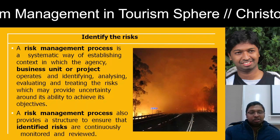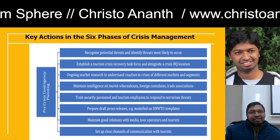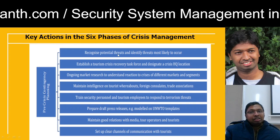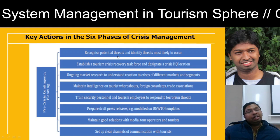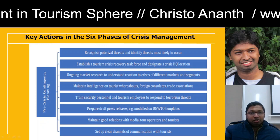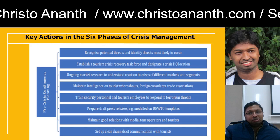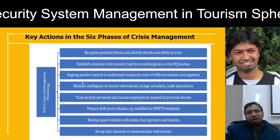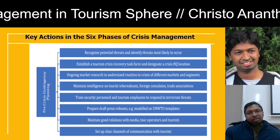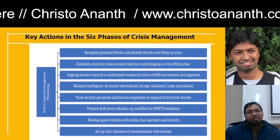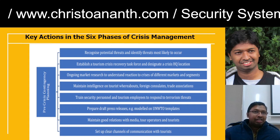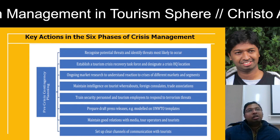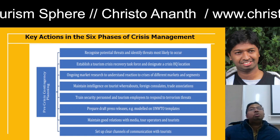These are the key actions in the six phases of crisis management. Phase one: pre-crisis contingency planning. You have to recognize potential threats and identify which threats are likely to happen frequently. You should establish a tourism crisis recovery task force with a headquarter location. Conduct ongoing market research to identify different markets and segments, and maintain intelligence on tourism — what foreign consulates and trade associations are available. Security personnel and tourism employees must undergo training on how to react if a threat happens.